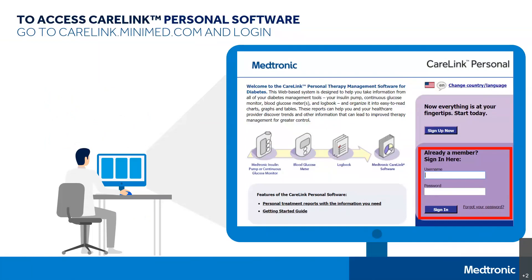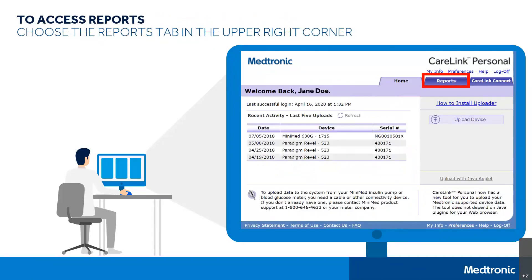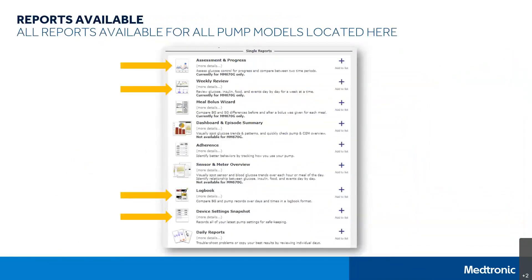To access CareLink personal software from home, please visit carelink.minimed.com. If you have not already done so, you can sign up for a free account where you will set up a username and password. This will allow you to log in and upload your insulin pump. Once you are logged in and have downloaded your insulin pump, click on the Reports tab located in the top right. These are some examples of the various reports that you have access to.